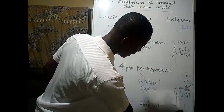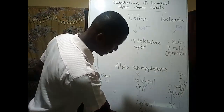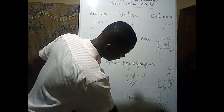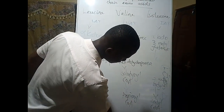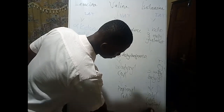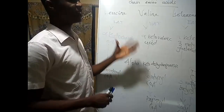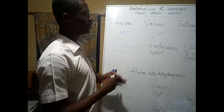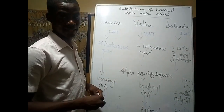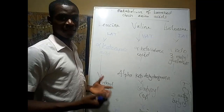For isoleucine, when we dehydrogenate 3-methylbutyryl-CoA, we can get both acetyl-CoA and propionyl-CoA. This is because the three branching amino acids belong to specific subgroups: ketogenic amino acids and glucogenic amino acids.